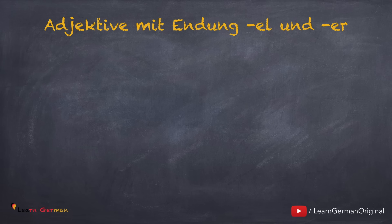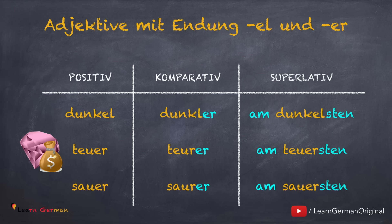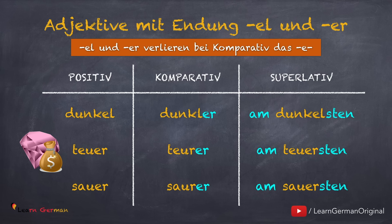Hier ist die nächste Kategorie: Adjektive mit Endung -el und -er. Dunkel, teuer und sauer. Dunkel, dunkler, am dunkelsten. Teuer, teurer, am teuersten. Sauer, saure, am sauersten.